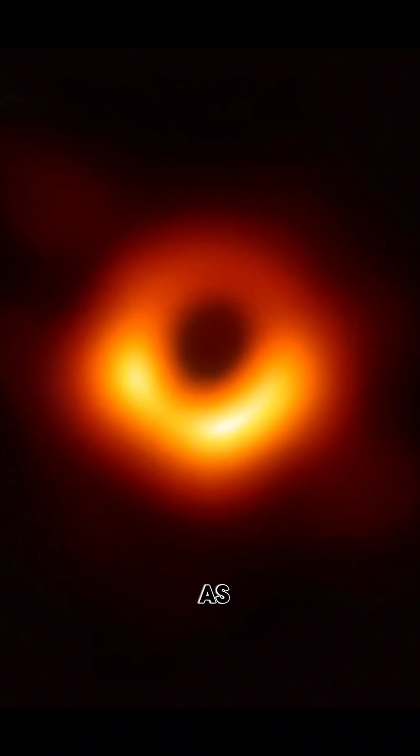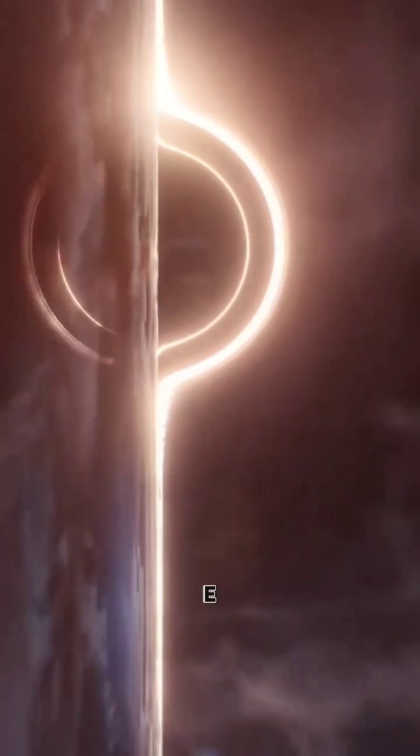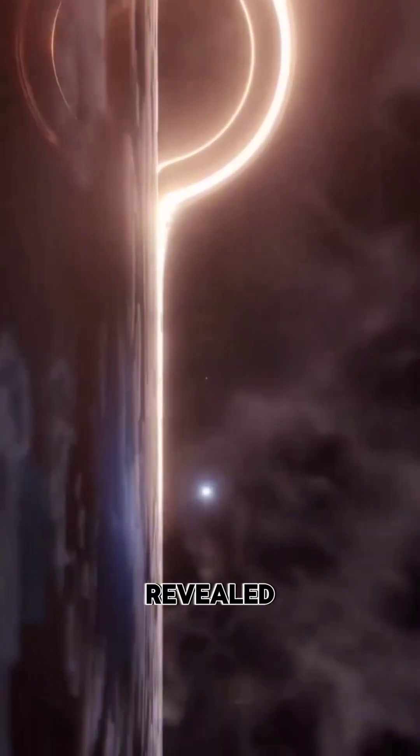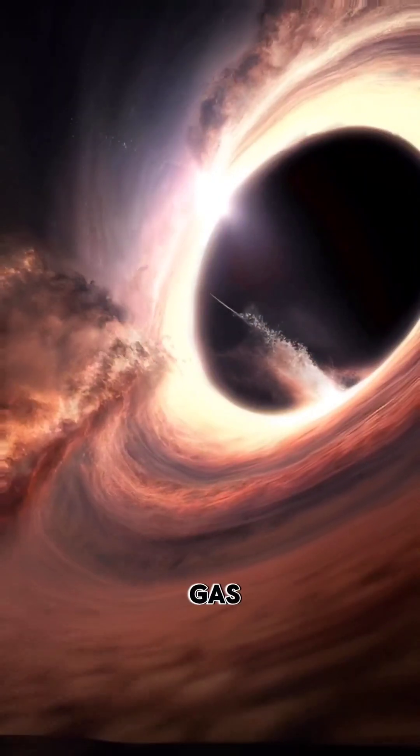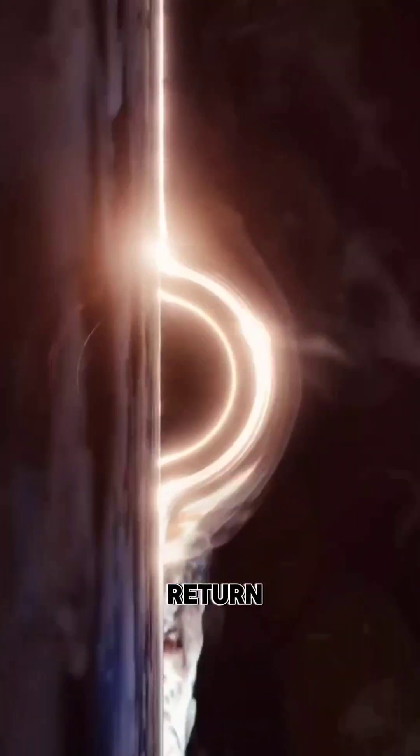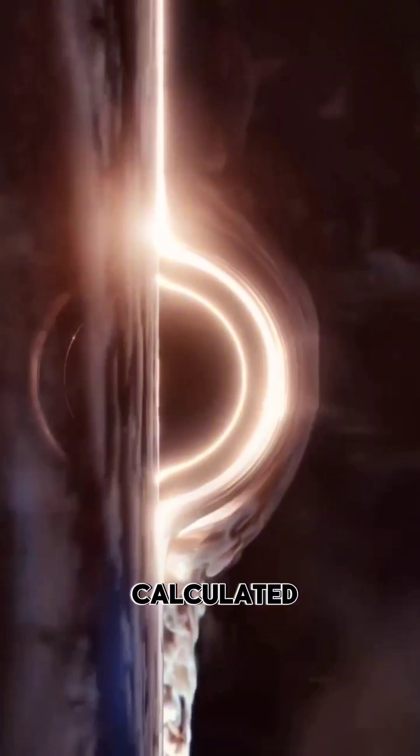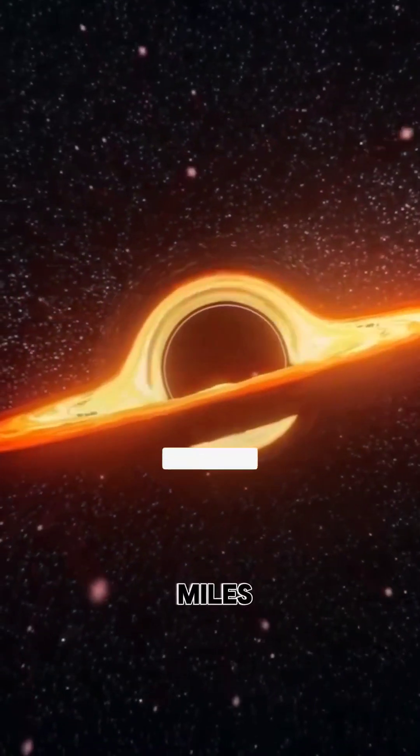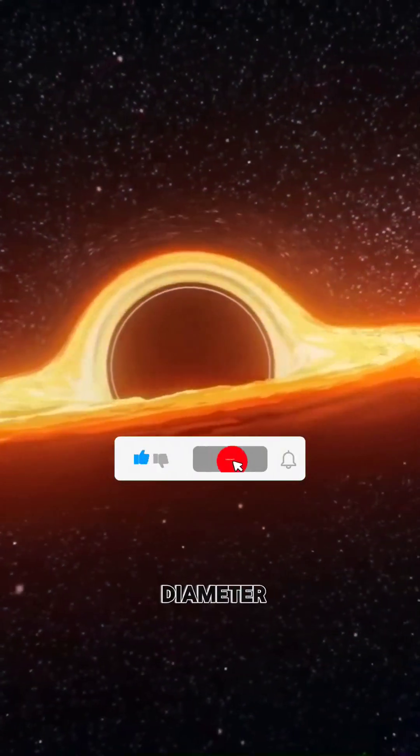This groundbreaking achievement, known as the Event Horizon Telescope, revealed the fiery ring of superheated gas surrounding the black hole's event horizon, the point of no return. Scientists have previously calculated that Sagittarius A is 16 million miles, or 26 million kilometers in diameter.